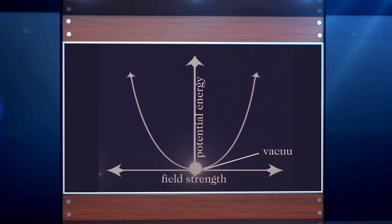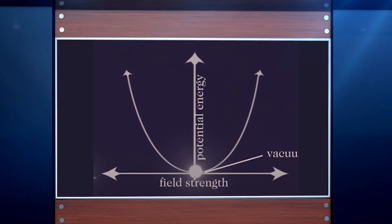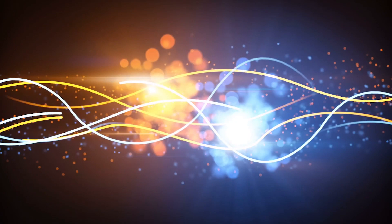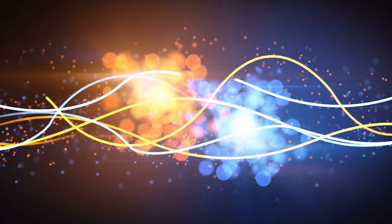But sometimes, the energy contained by a field has a more complex relationship with field strength. The field could have a local energy minimum, and if a quantum field finds itself near such a local minimum, it would roll down to the bottom and get stuck there.